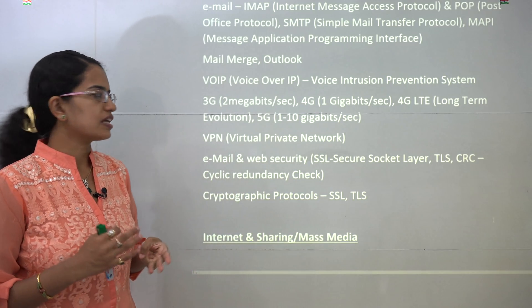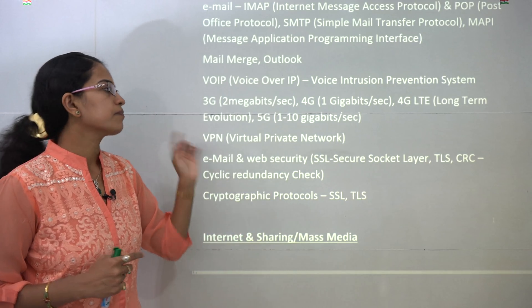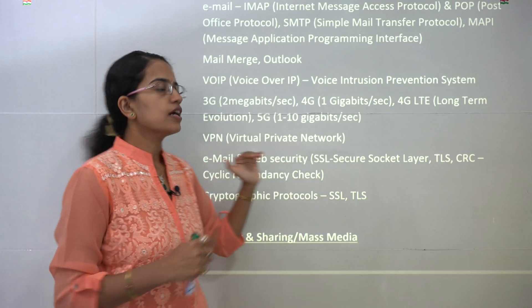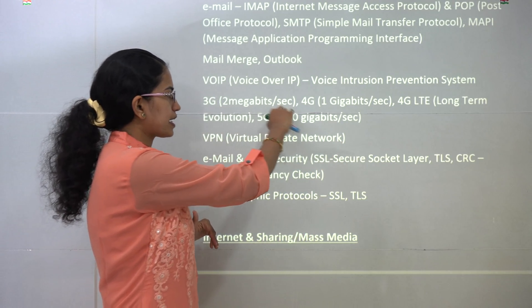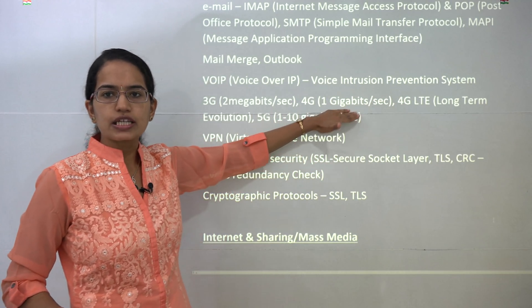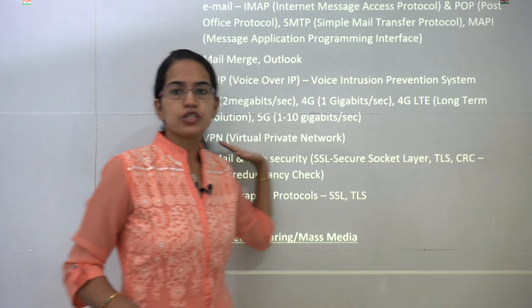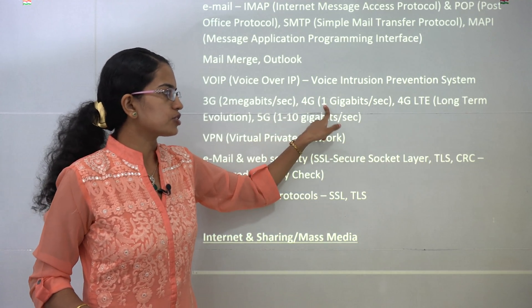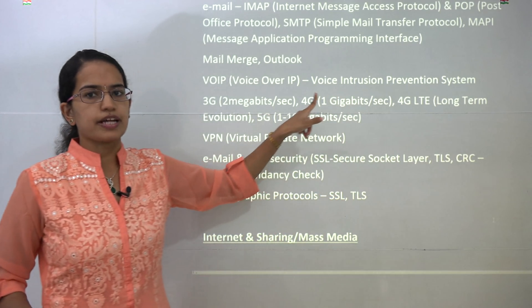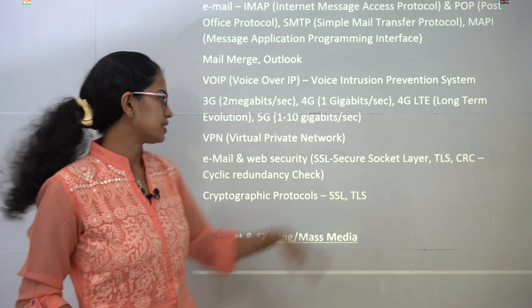For mobile networking you have 3G, 4G, 4G LTE, and 5G technology. These are used for mobile networking, not WiFi. Under 3G the speed was 2 megabits per second; 4G has an ideal speed of 1 gigabit per second. 4G LTE stands for Long Term Evolution, and under 4G LTE we try to attain that 1 gigabit per second speed. Under 5G we talk about 1 to 10 gigabits per second.